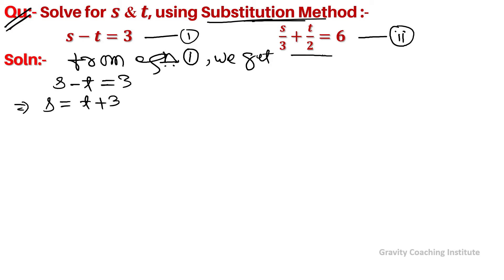Substituting s = t + 3 in the second equation, in place of s we write (t + 3)/3 + t/2 = 6.